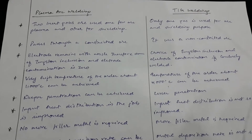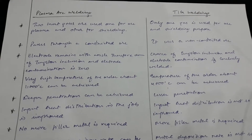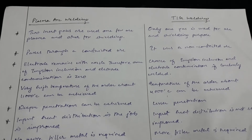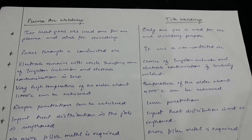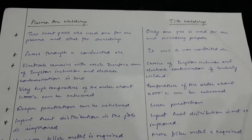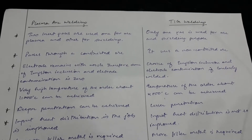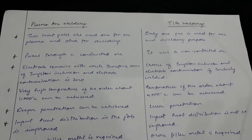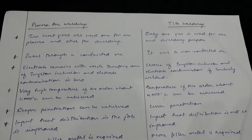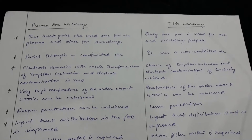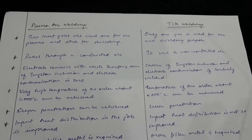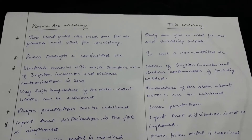Today we will discuss the difference between plasma arc welding and tungsten inert gas welding. In plasma arc welding, two gases are used: one for generating the arc and the other for shielding. In tungsten inert gas welding, there is only one gas which performs both arc generation and shielding.